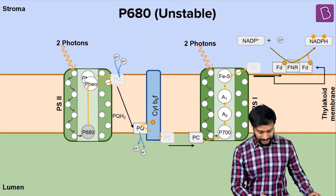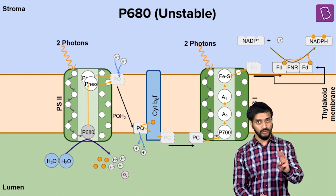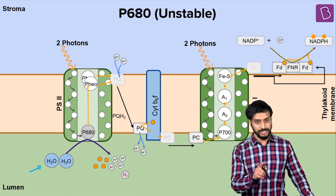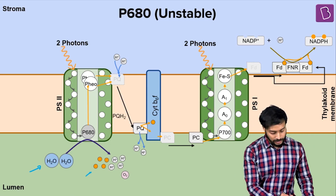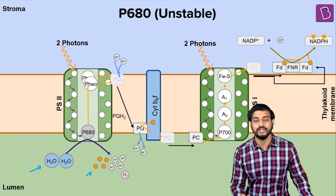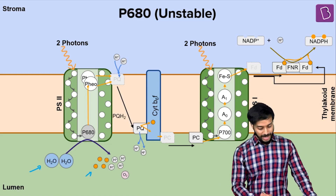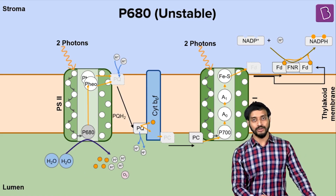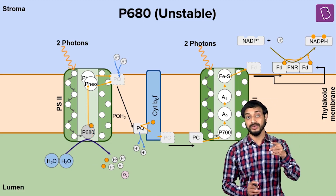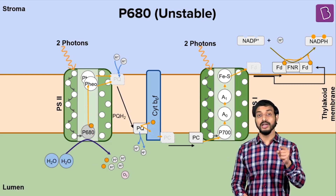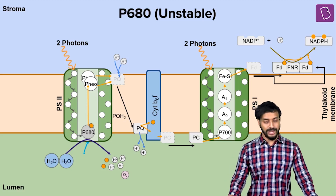Splitting of water: 2H₂O produces 4H⁺, 4 electrons, and 1 O₂ molecule. The electrons formed by the splitting of water are used to stabilize P680. We were talking about 2 P680 molecules, so 2 electrons go and stabilize them. This is why water is essential — without water, plants cannot perform photosynthesis.